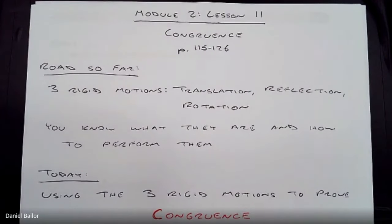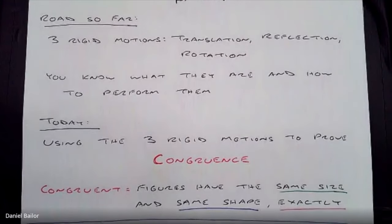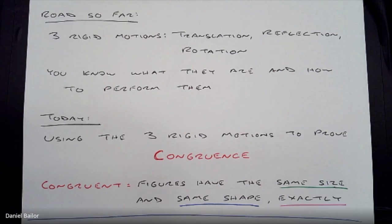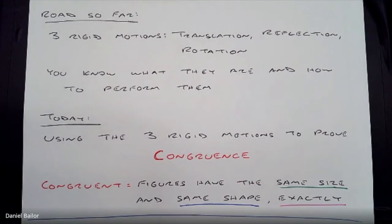Today, using the three rigid motions, we are going to prove congruence. Congruence means that figures have the same size and the same shape — exactly. It has to be a triangle with the same sides and the same angles, exactly the same. That's what congruent means.